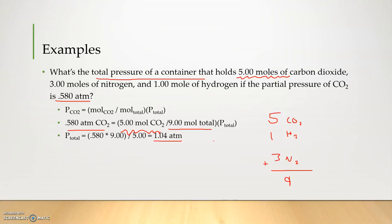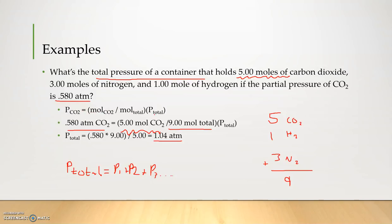So we learned two new equations today. We learned P total equals P₁ plus P₂ plus P₃, and this can go on as long as needed — it's not limited to three gases. We also learned that the partial pressure of one gas equals the mole ratio of that gas to the total moles, times the total pressure. Hopefully this helps you with your homework. If you have any questions, feel free to ask. Thanks.